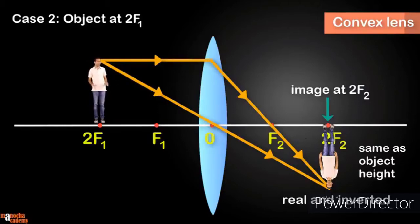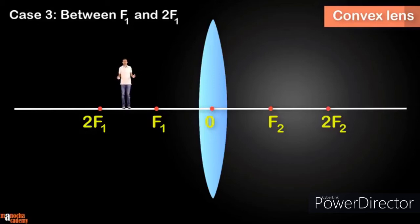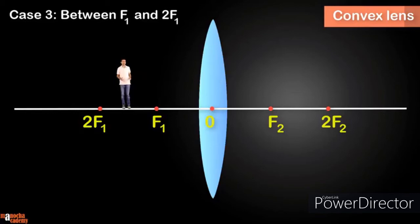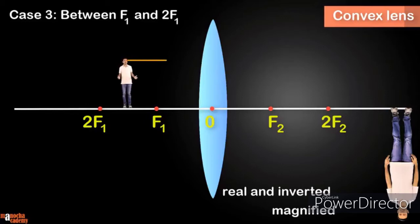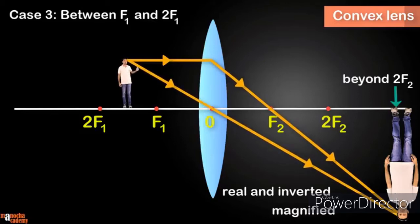It's a real image because it's formed by the intersection of the rays. For case three, the object is between f1 and 2f1. The image is real and inverted and magnified. As you can see from the ray diagram, the position of the image is beyond 2f2.